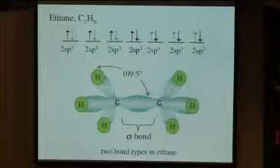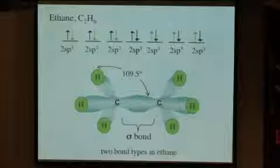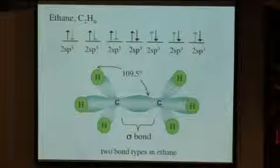So in terms of thinking about ethane, we actually have two bond types that we're going to be describing, just in terms of the carbon-carbon bond and then the carbon-H bonds.